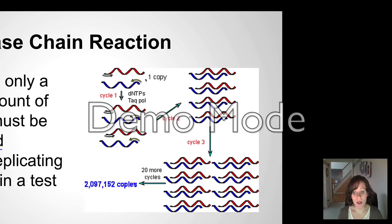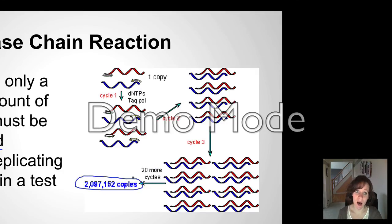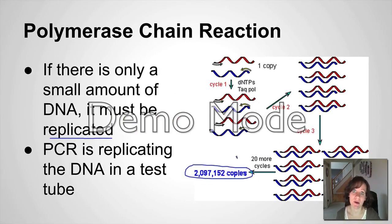You start with one copy, you make more copies after the second cycle, after the third cycle. After 20 or more cycles, you can end up with over 2 million copies. You'll learn more specifically about that process in AP Bio. But for now, just know that PCR amplifies or replicates DNA.